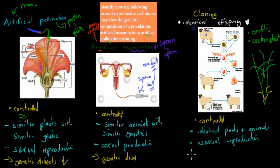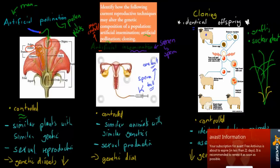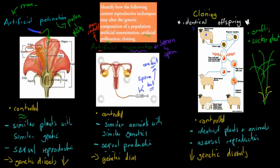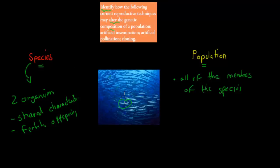With cloning, genetic diversity has definitely decreased significantly — genetic diversity referring to how many different types of genes exist in a population. All the cloned organisms are identical, so there is very low genetic diversity. For example, if all the fish in a population are clones of one fish, every single fish has the same genes and there is no genetic diversity at all.